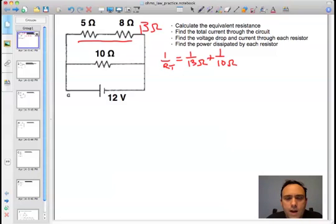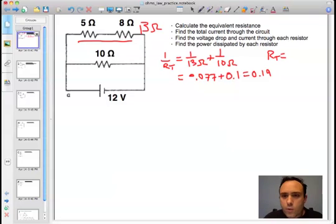If you evaluate this expression, you get 1 over RT is equal to 0.077, and that's plus 0.1, and that's equal to 0.19. RT then equals 5.6 ohms.